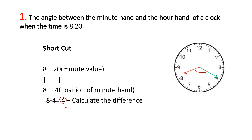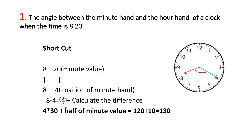Now we do four times thirty. We add four times thirty, and also account for twenty minutes. We multiply 30 by the fixed number. Then we multiply 30 by half of the minute value. The minute value is 20, so half is 10.